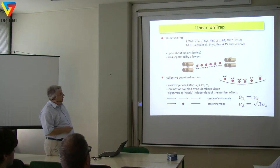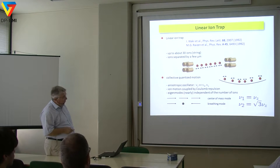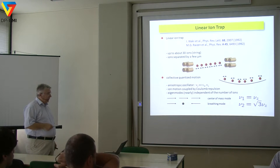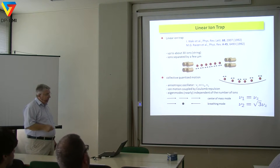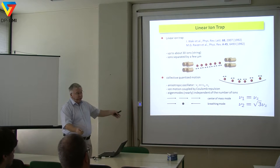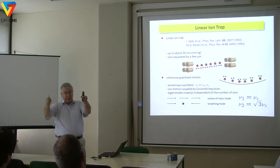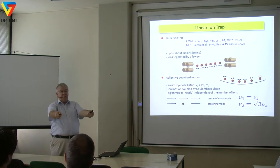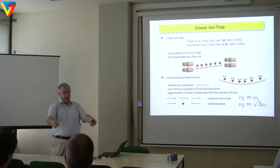For two or more ions, you get normal mode frequencies like coupled pendula. The first eigenmode is always the center-of-mass mode, where all ions shake back and forth together. For two ions, the second mode has the ions moving in opposite directions. Any motion is a linear superposition of these modes. Adding an ion adds a mode. For ions coupled by the Coulomb force, the second mode — the breathing mode — has a frequency that is a factor of square root of 3 larger.